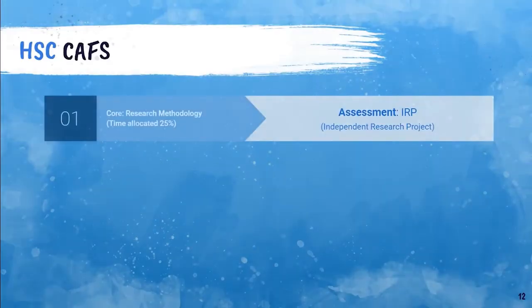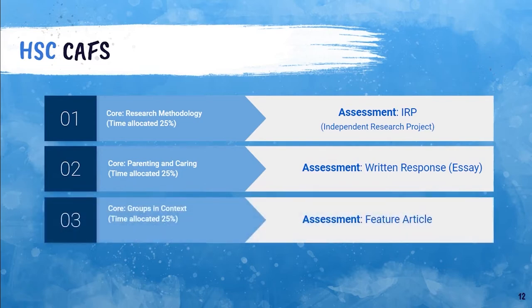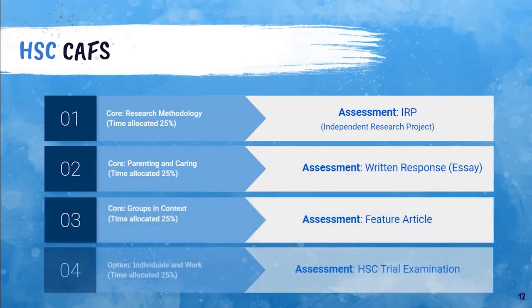Research Methodology is the first unit you do. The IRP, the Independent Research Project, generally goes over Term 4 and is completed by about Week 6 of Term 1 of your HSC studies. In Parenting and Caring you then do an essay.